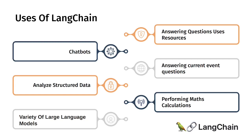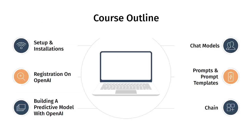LangChain also provides what are called tools. Current LLMs like GPT are not very good at performing mathematical operations, so LangChain provides tools trained to do specific things — for example, a math tool for mathematical calculations or a tool for searching Google. We'll be covering all of these throughout the course.